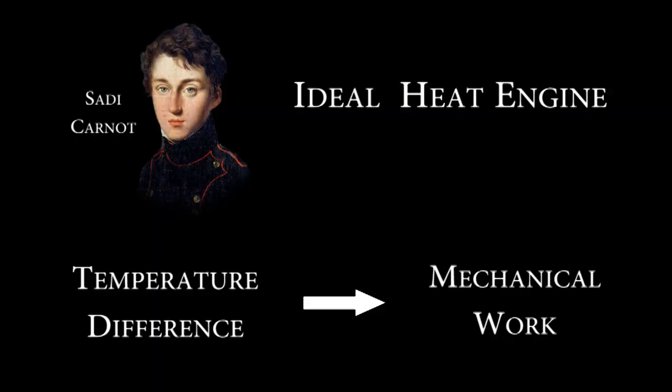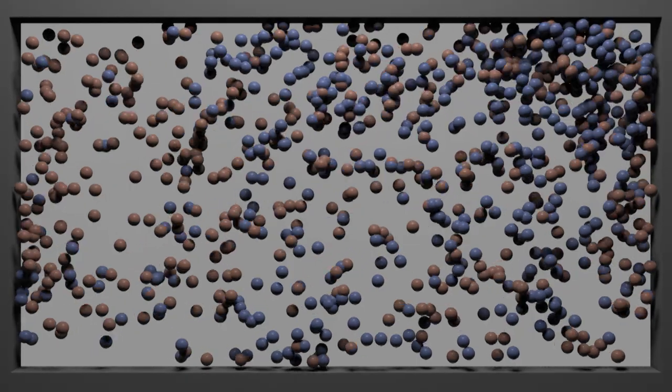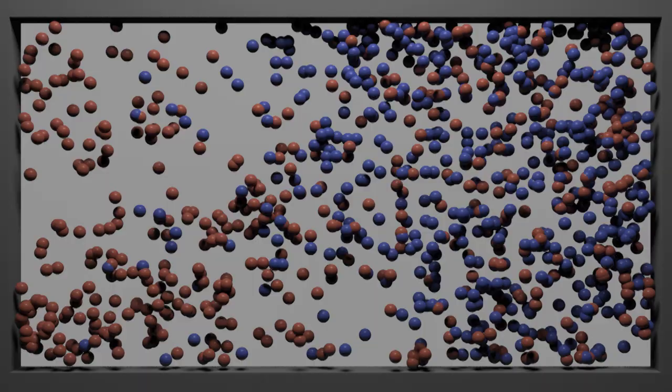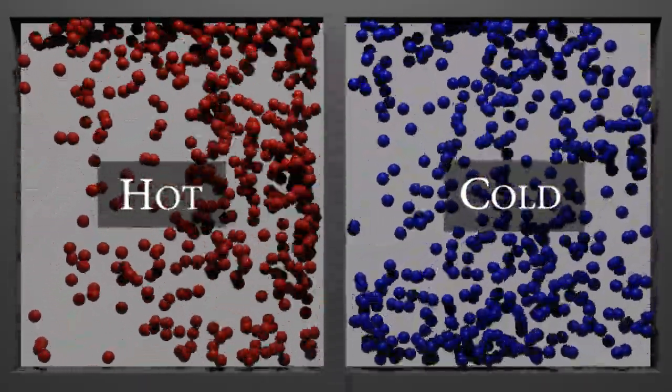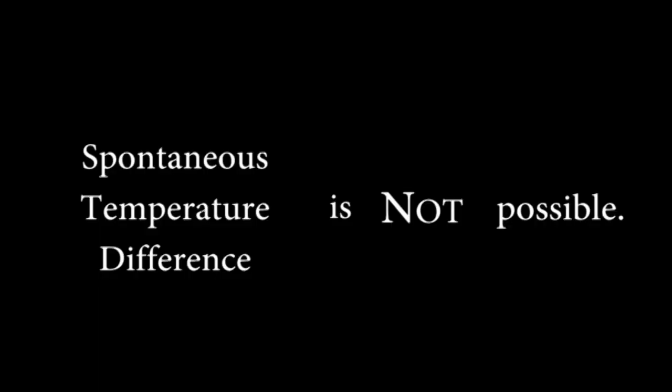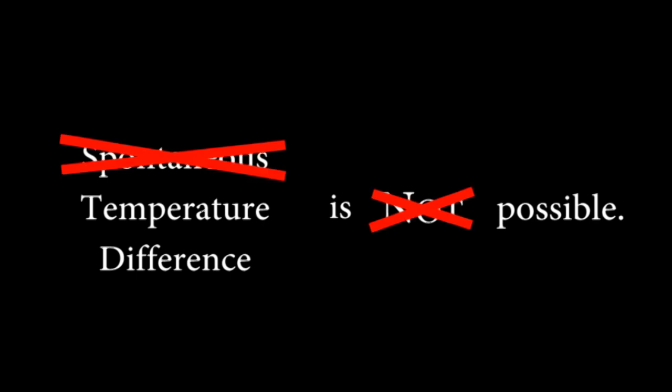Carnot developed an ideal heat engine. It's the most efficient way to convert a temperature difference into useful mechanical work. He argued that the only way that you could do this more efficiently was if somehow heat could spontaneously separate itself into hot and cold objects. But this is impossible. Now, actually, there is a way to separate heat into hot and cold objects, but this does not happen spontaneously. You have to put energy into the system.